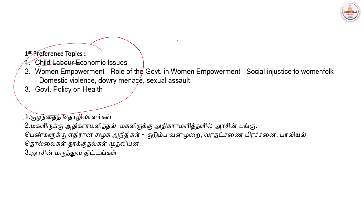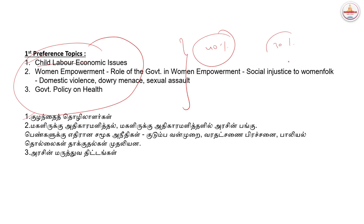We already have the 80-20 principle in administration. For the first preference topics, we have 40% of questions. Second preference topics have 30%, and third preference topics have 20%.